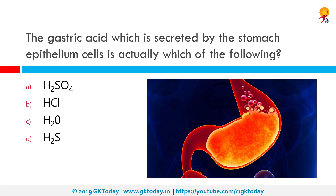The gastric acid which is secreted by the stomach epithelium cells is actually which of the following? Gastric acid is actually HCl, or hydrochloric acid. These cells are also called parietal cells and produce gastric acid in response to histamine, acetylcholine, and gastrin.